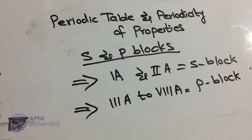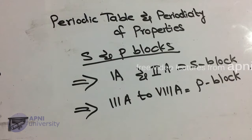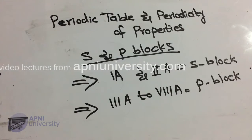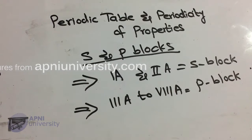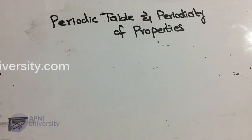Group 3A aur 8A ke elements, except helium, hamare paas p-block elements kehlate hain, kyunke unke valence electrons hamare paas p sub-shell mein present hote hain.